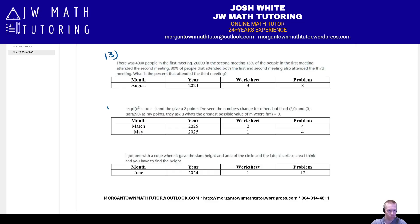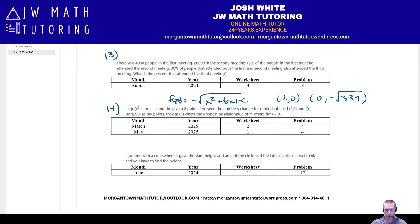Number fourteen: they give you a function f(x) = x² + bx + c and two points, typically (2, 0) and (0, −√something), like −√290 or −√334. The question usually asks for the greatest value of m where f(m) = 0 — in other words, the largest x-intercept or largest zero. In some cases it asks for the smallest, which would just be 2. Check out the two examples I've worked out previously.